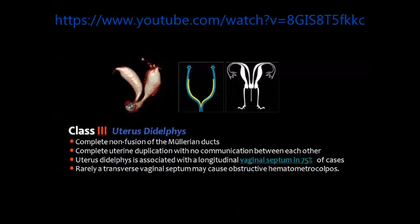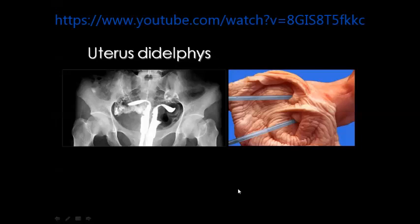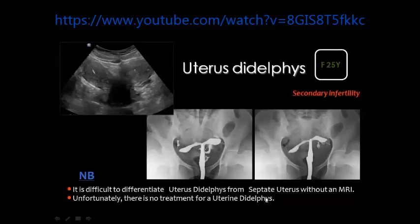Uterus didelphys is characterized by complete non-fusion of the Müllerian ducts with formation of two separate uterine cavities and two separate cervical canals. A vaginal septum is usually present in about 75 percent of cases. By hysterosalpingography you may need to introduce two cannulas — one in each cervical canal — to opacify both uterine cornua. You should remember that in uterus didelphys there are two separate uterine bodies, two separate uterine cavities, and two separate cervical canals.